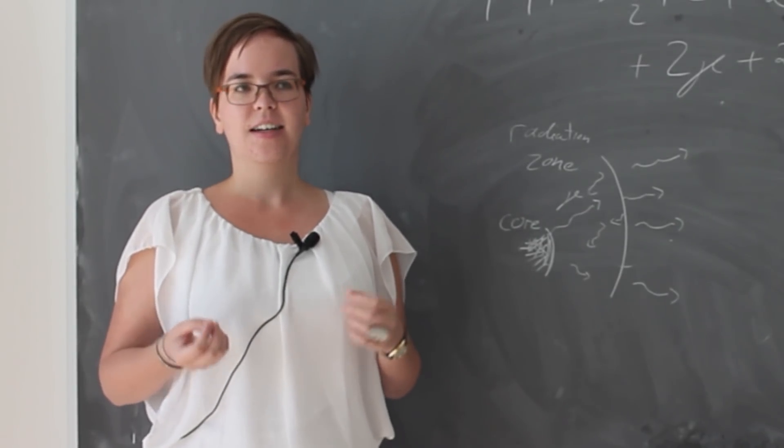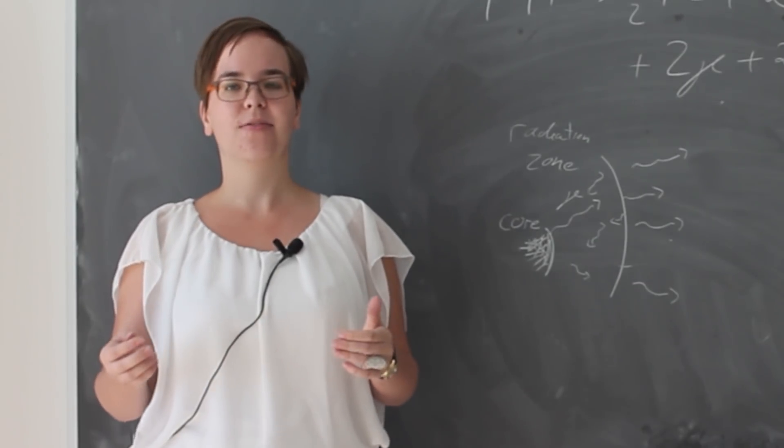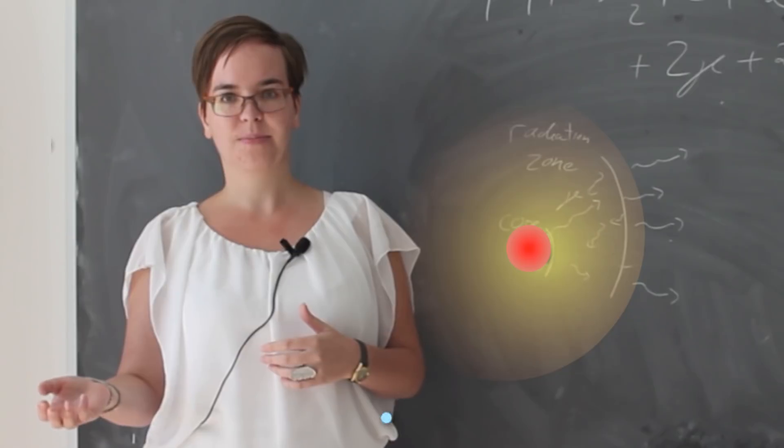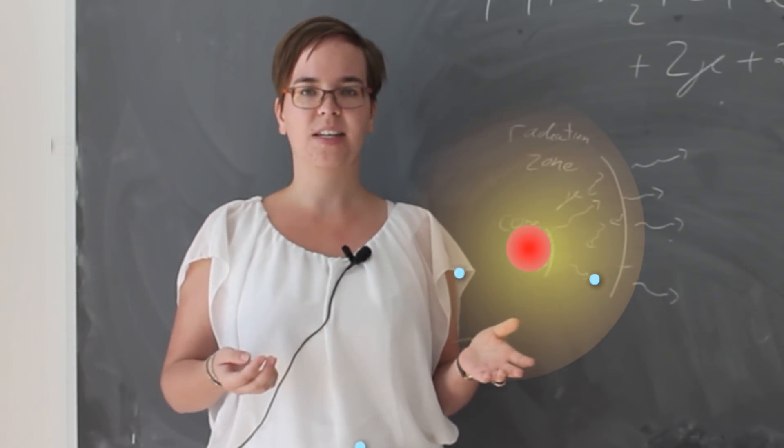For neutrinos, on the other hand, the probability that neutrinos interact with the solar material is 20 orders of magnitude smaller than the cross-section for photons with the solar material. So the neutrinos get out of the Sun very easily. It only takes them two seconds to escape the Sun.